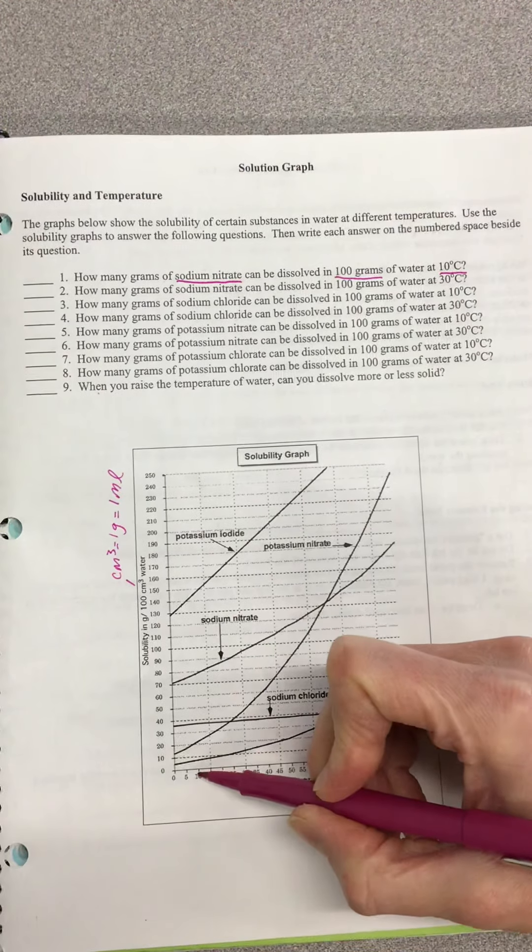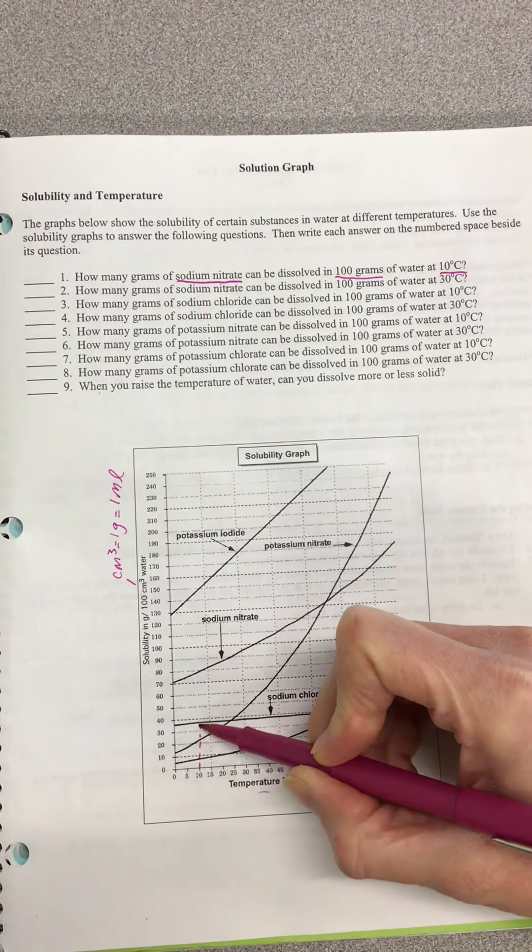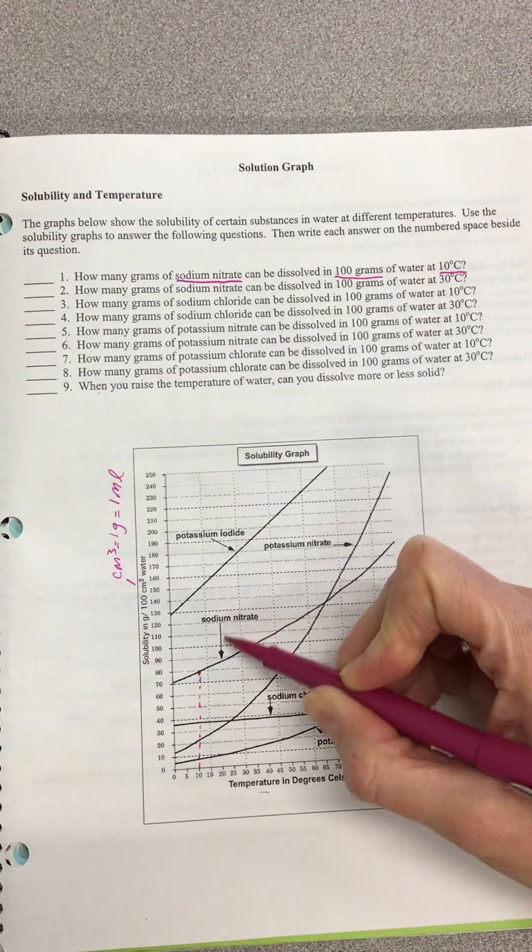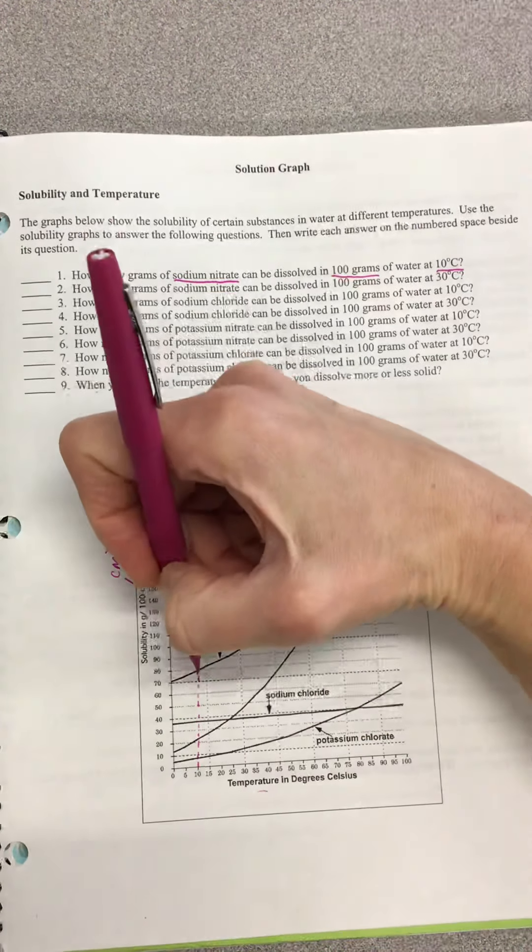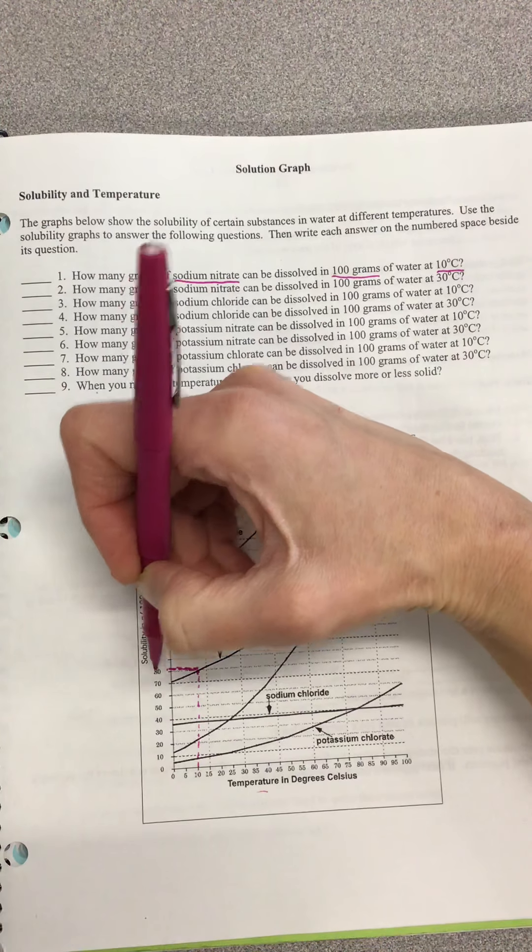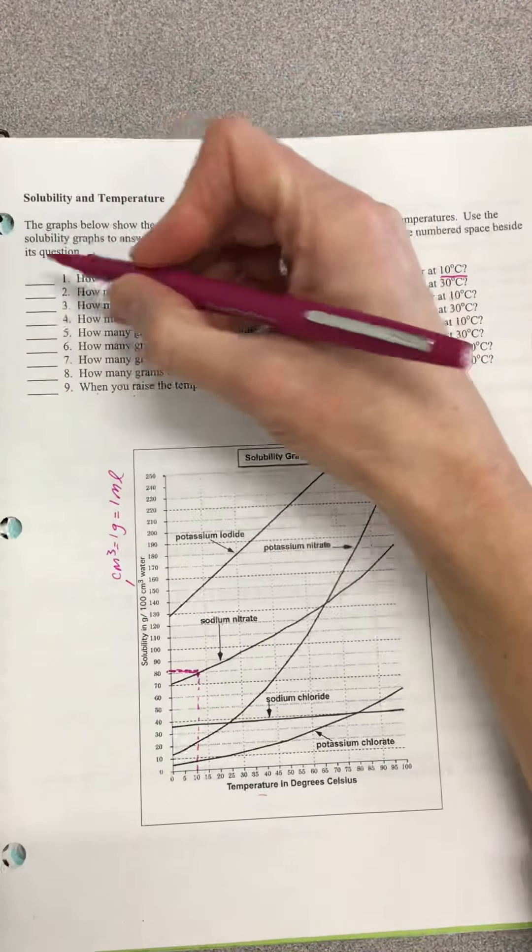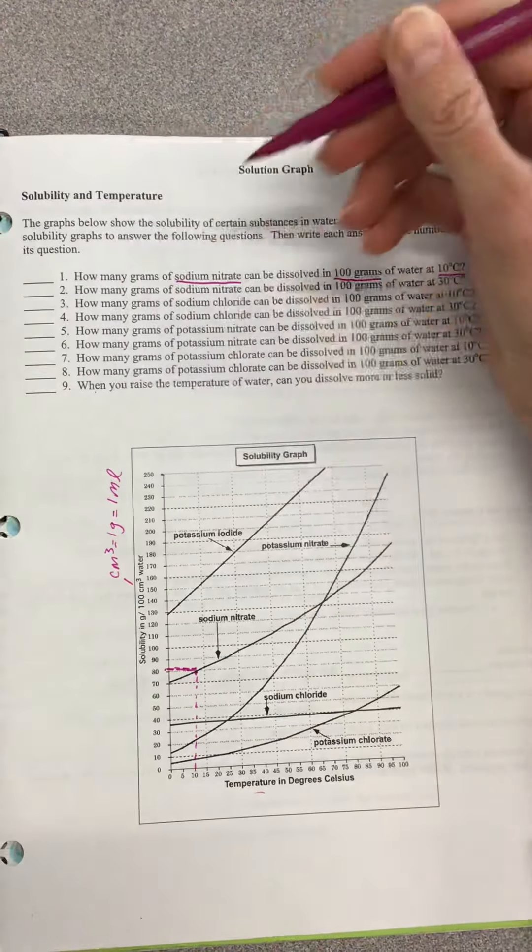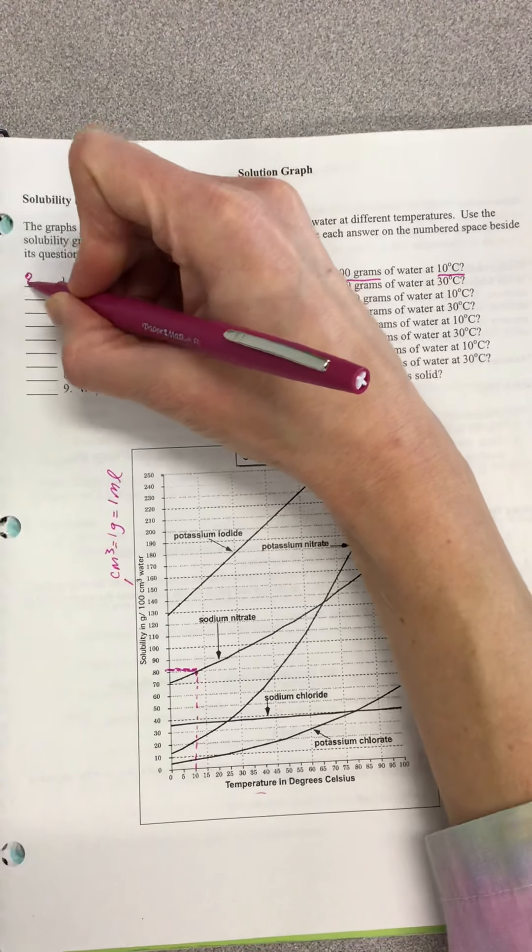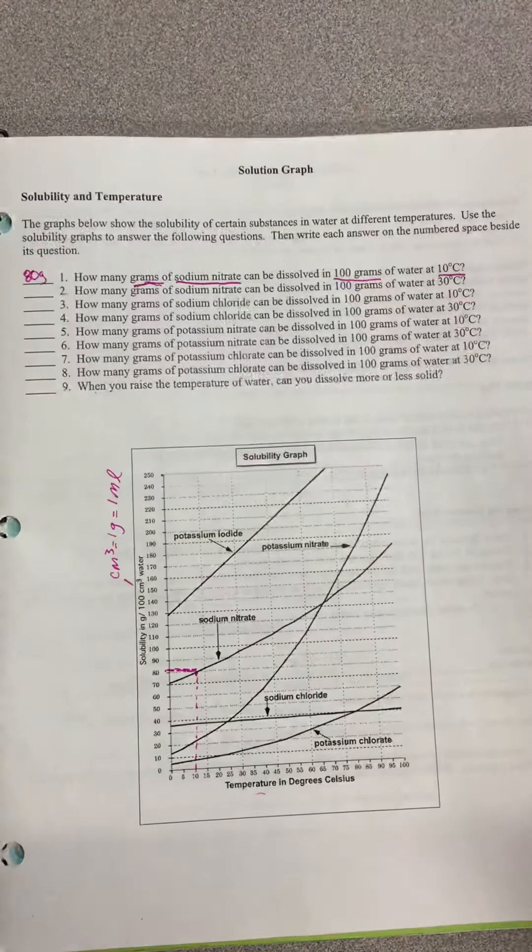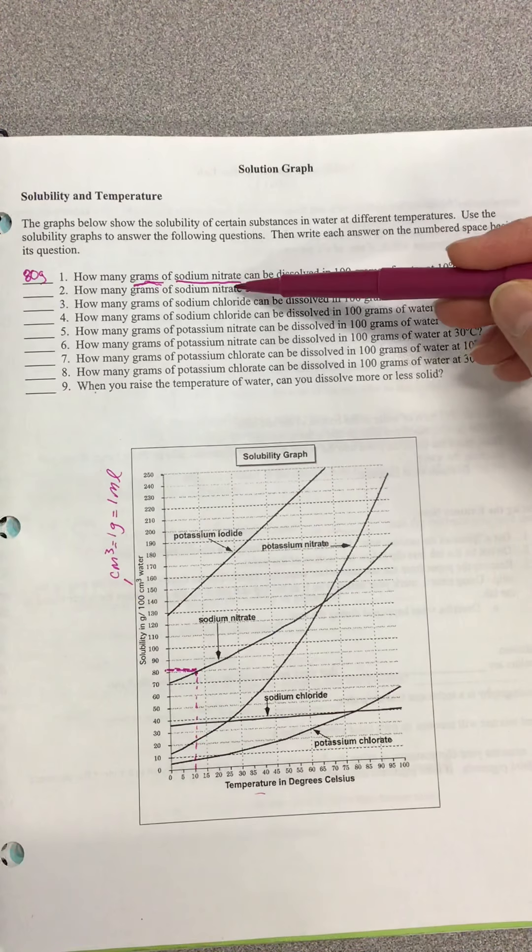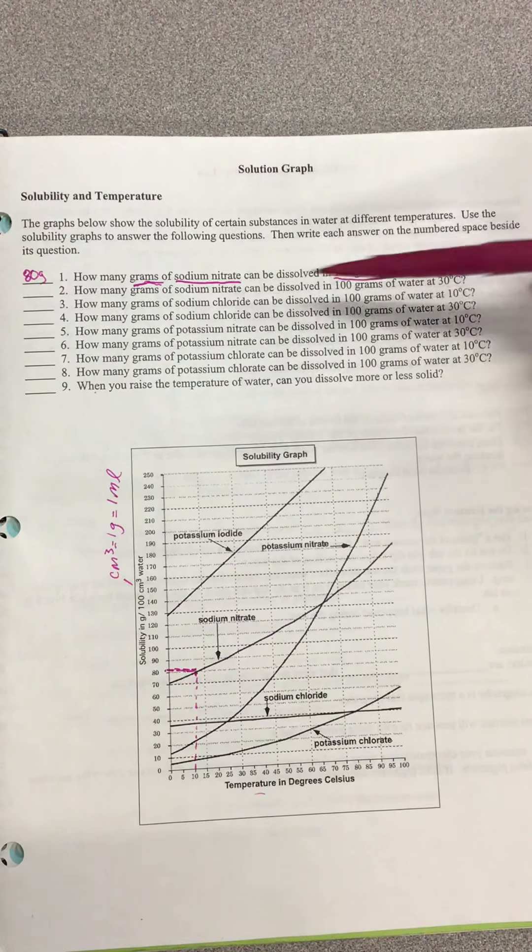Then you want to say, at 10 degrees Celsius, I'm going to go down here to my degree Celsius—this is 10 degrees Celsius. So I'm going to go up to where 10 degrees Celsius hits the sodium nitrate line, and then I'm going to go over, and that is about 80 grams. Because it's saying how many grams, you're able to identify your units. So you would say 80 grams.